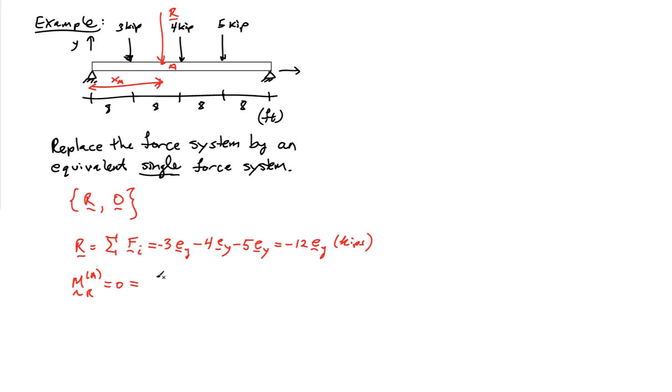And the expression for that is going to be the lever arm from A to the first force, which is located at A, times the force value, plus the lever arm to the second force, which is XA minus 16, times 4.